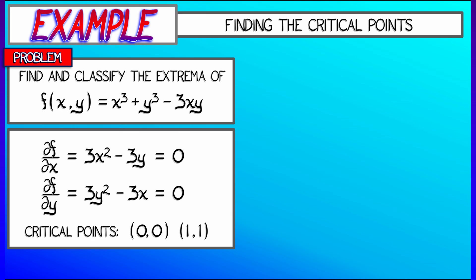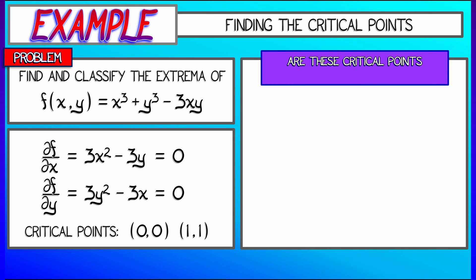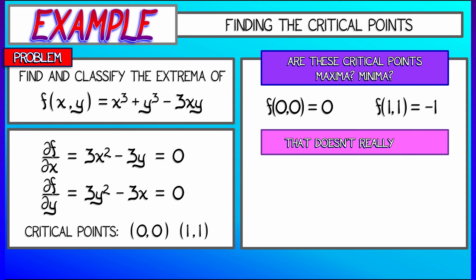Well, I suppose we could evaluate the function at these points. At 0, 0, we get 0, of course. And at 1, 1, we get negative 1. So I don't know, maybe one of them's a local min, the other's a local max. This is not really helping a lot.